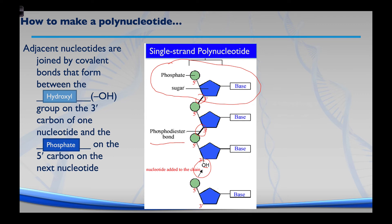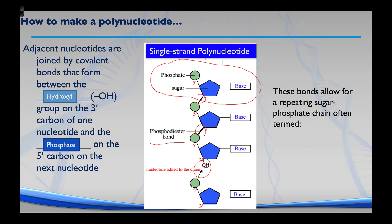The phosphodiester bond that repeats over and over as new monomers join the polymer is what we term the sugar-phosphate backbone. The green dot is a phosphate, connected to a sugar — the blue pentagon — then back to a phosphate, back to a sugar, back to a phosphate, over and over. That same sugar-phosphate chain gets bigger and bigger, and that's one side of a DNA molecule — the sugar-phosphate backbone.